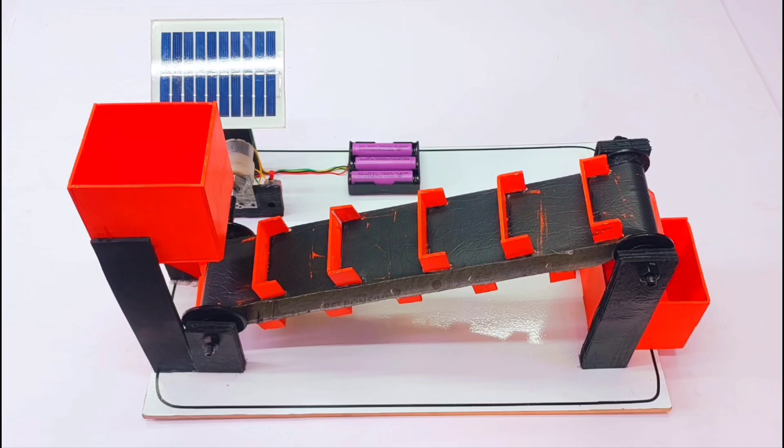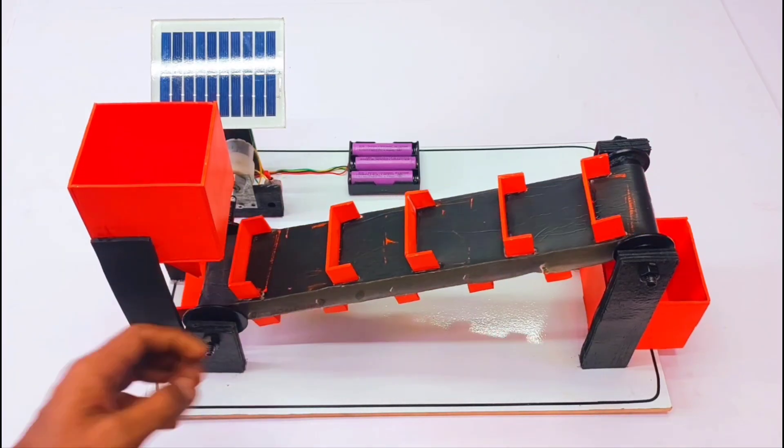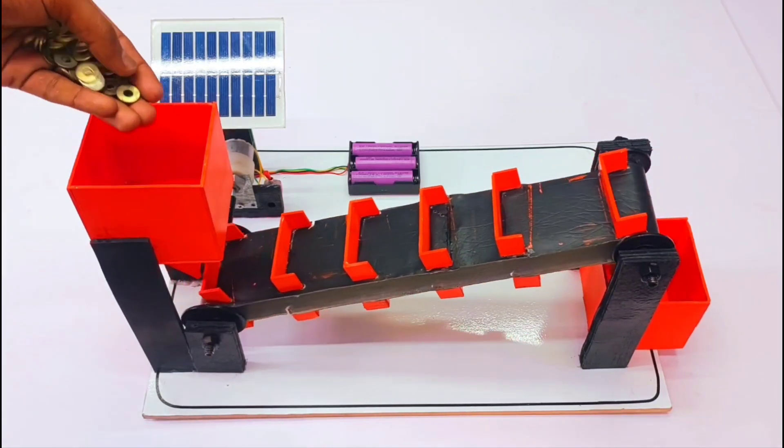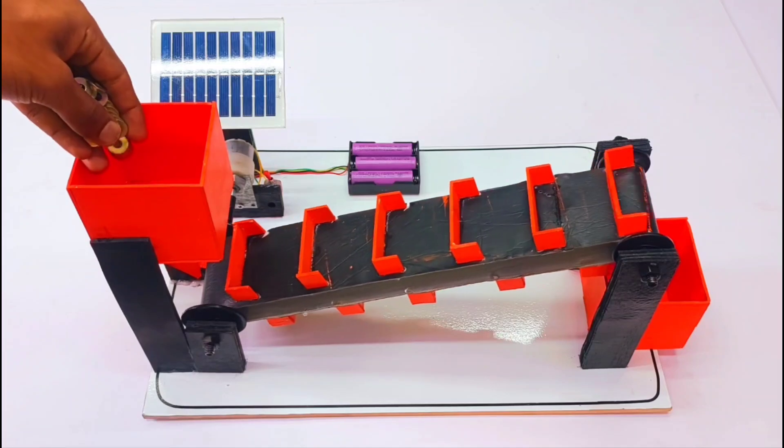Let's see the working of the project. First of all, we have to switch on the power supply like this. The conveyor belt will rotate. I'm fetching some components here and adding them.